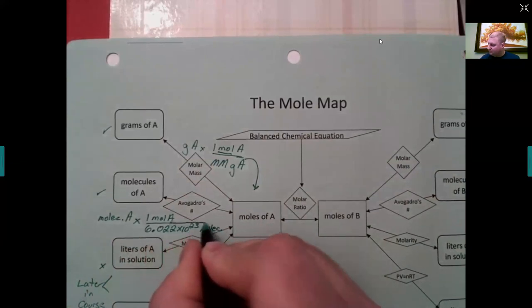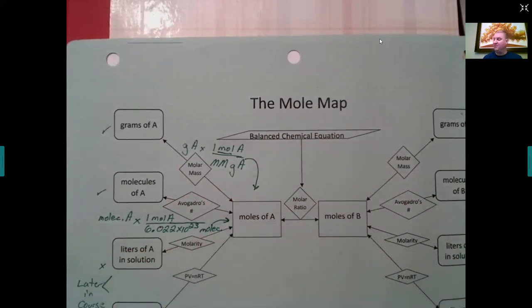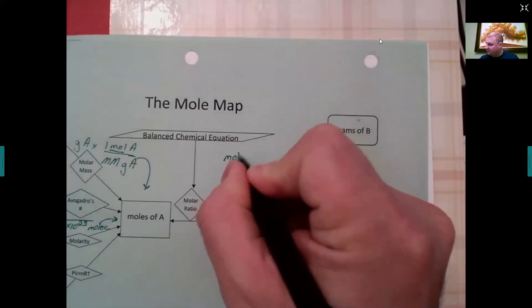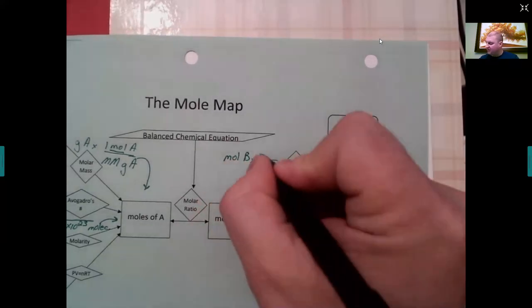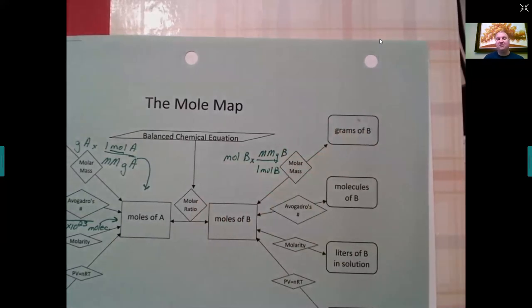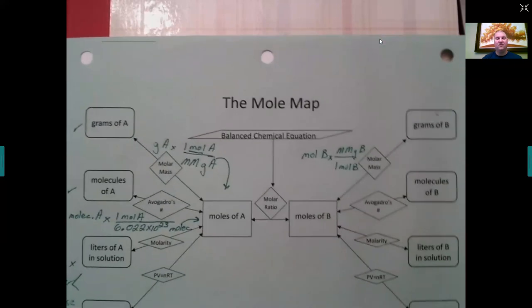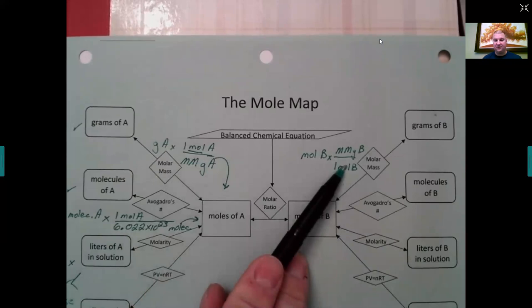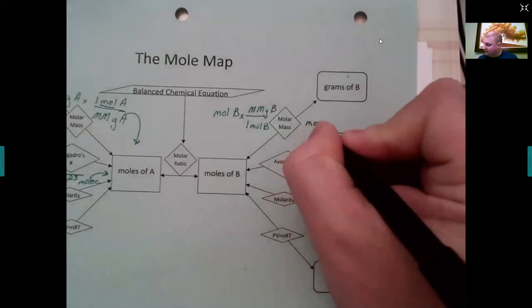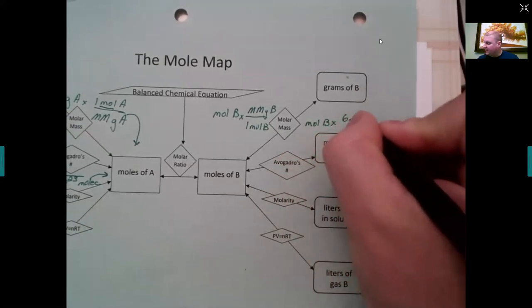Solving that gives you moles of A. Going in the opposite direction — from moles of B to grams of B — you multiply by the molar mass in grams per one mole of B. These two conversion factors are just flipped versions of each other. Of course, if A and B are different compounds or elements, those molar masses will be different.